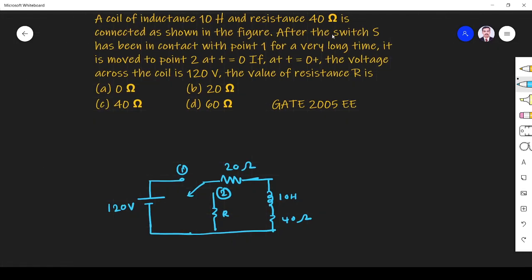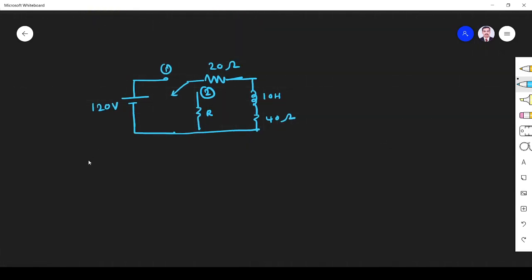So it is in contact with point 1 for a long time. At T is equal to 0 it is moving to point 2. So at T is equal to 0 minus it is in contact with point 1. So it will be like this: 120 volt is in contact here, this is 20 ohm. Since DC is applied, the inductance is shorted.